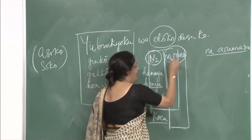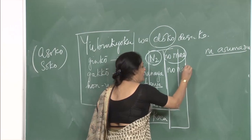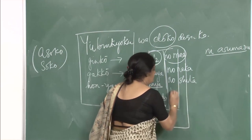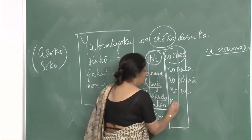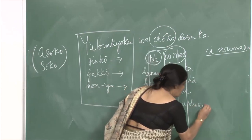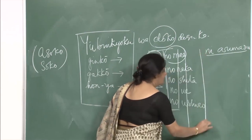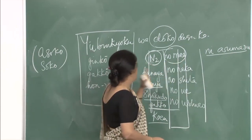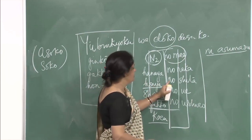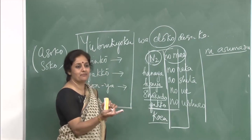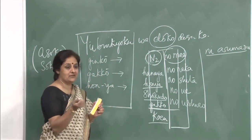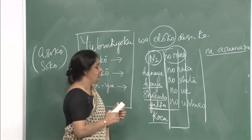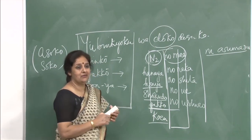Locational nouns: no mae — in front, no naka — inside, no shita — below or under, no ue — on top, no ushiro — behind. Combined with ni arimasu. So: ginkou wa noun no mae ni arimasu, ginkou wa noun no shita ni arimasu. Shita means below or under, naka means inside, ue means on top, ushiro means behind, mae means front.